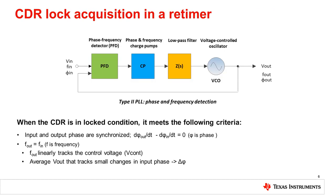The CDR in a retimer implements the functional blocks found in a phase locked loop. When the CDR is locked, the VCO output frequency has been pulled to match the input frequency. Moreover, the VCO frequency linearly tracks its control voltage. With the CDR locked, the output data has a strict phase relationship with the input data, and the output voltage tracks phase changes.